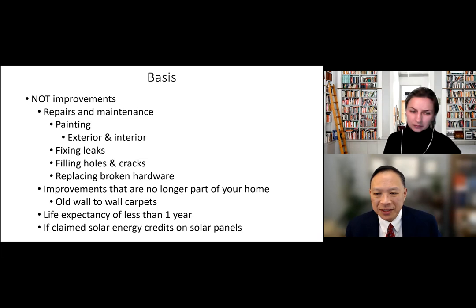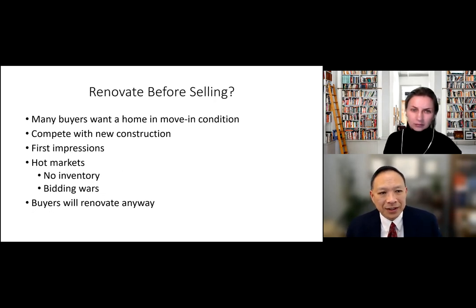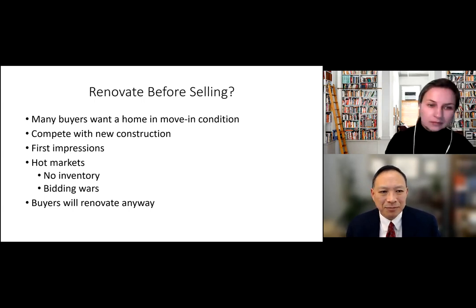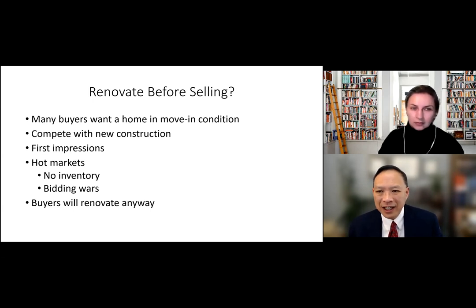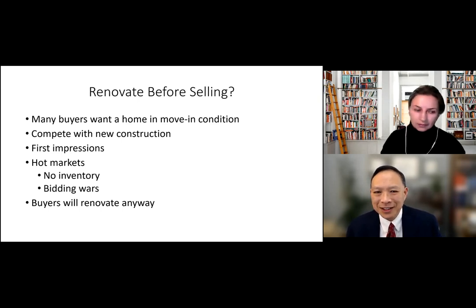Items with a life expectancy of less than a year don't count. If you claimed solar energy credits on solar panels, you can't also count them as an improvement — no double-dipping. I want Katerina's input here because I've seen clients spend too much money renovating before selling. In my view, you're delaying the sale, incurring costs, and the buyer will often redo everything anyway. What's your take on pre-sale renovations?